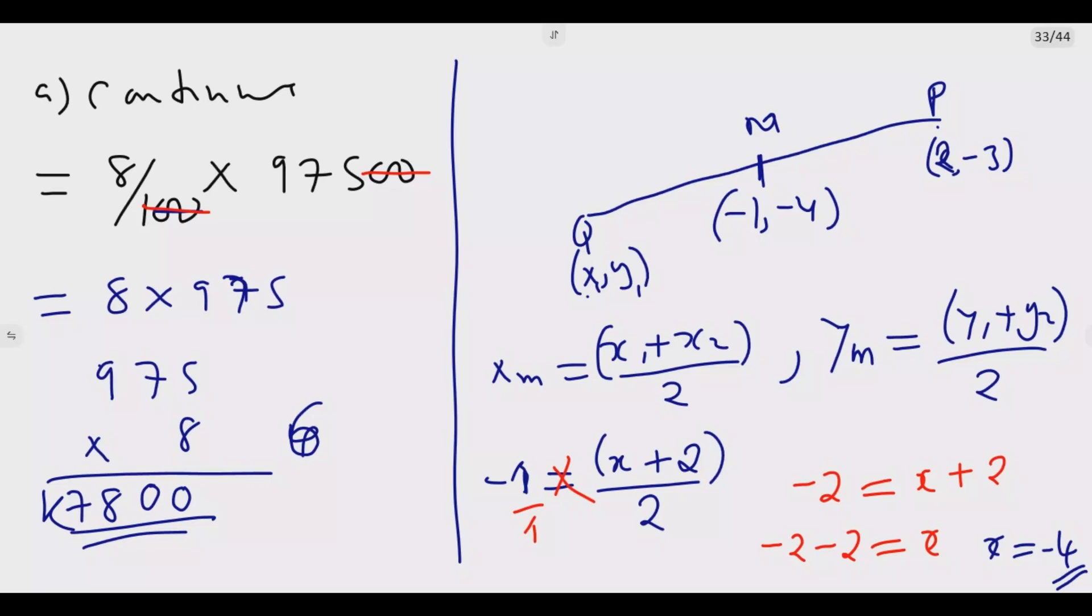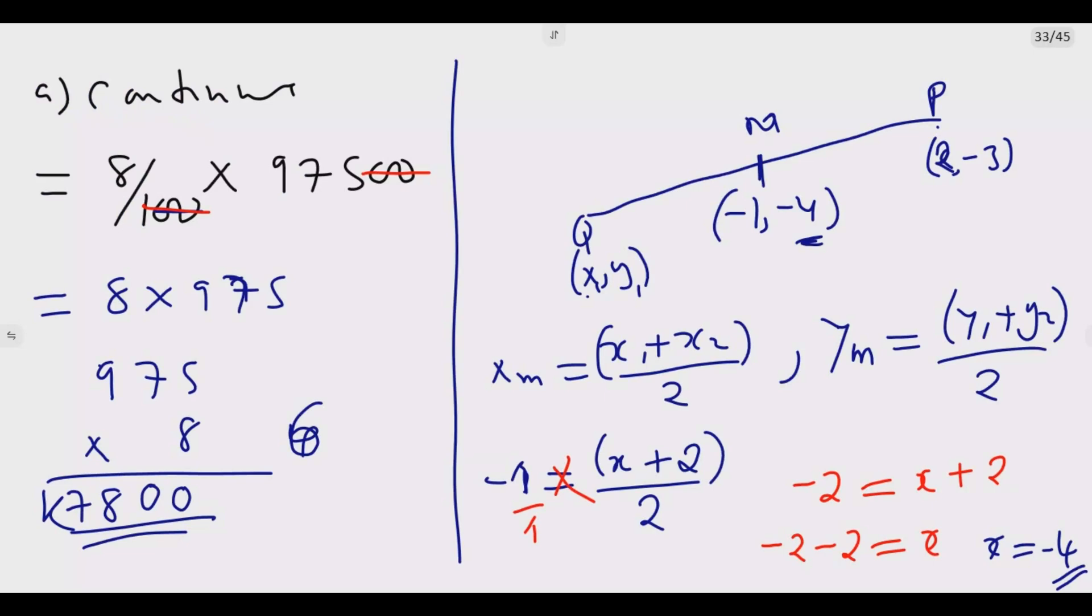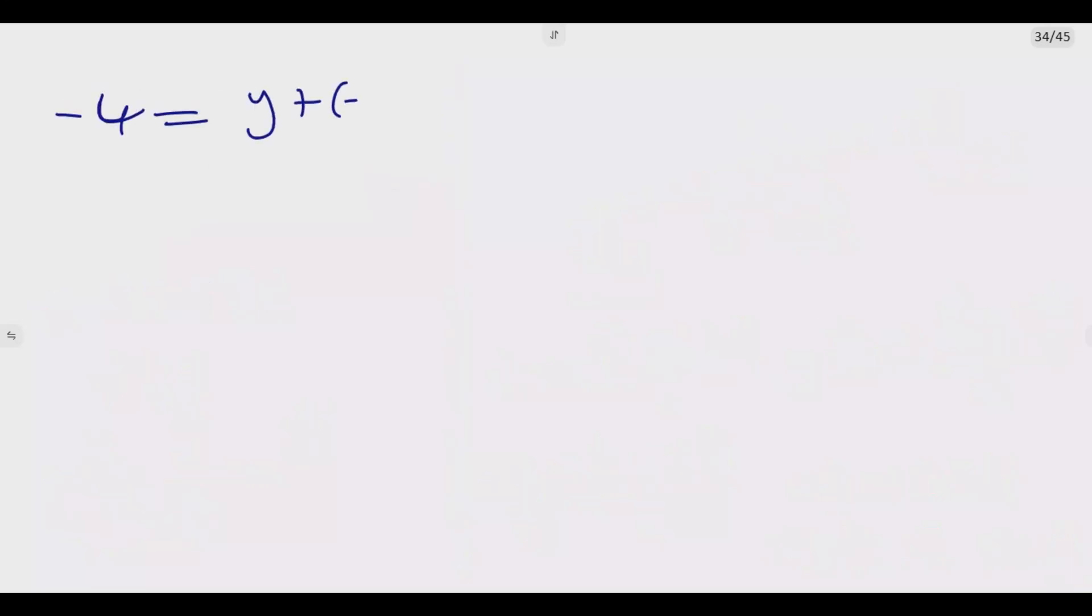That's the first value of X, so we have -4. Then I solve for the value of Y now. Similarly, the value of Y: -4 equals Y plus -3 over 2. Then again we use the same principle. We cross multiply. So -4 times 2 equals Y minus 3.